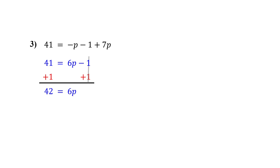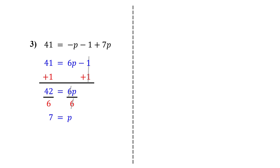Finally, get p by itself by dividing both sides by 6. The 6s cancel out, leaving just p. 42 divided by 6 is 7. So the solution is p equals 7. To check, plug in 7 for p in the original equation and simplify.